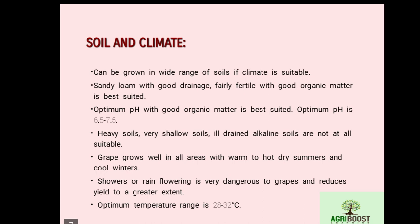Grape grows well in areas with warm to hot dry summers and cool winters. The optimum temperature range is 28 to 32 degrees Celsius. Rain during flowering is very dangerous and reduces yield. Summer temperature should not exceed 35 degrees Celsius. The temperature range for better flowering is 18 to 21 degrees Celsius, and high night temperature above 25°C is required for fruit ripening and color development.